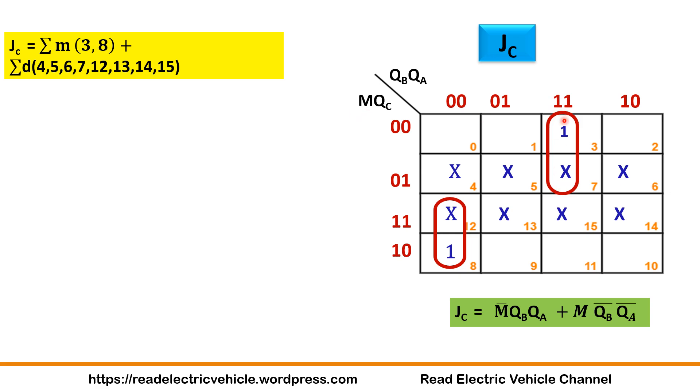If you take this combination, the common term is M̄ and here it is QB, QA plus, for this one M is common and here you have Q̄B, Q̄A. So we have finished JC.